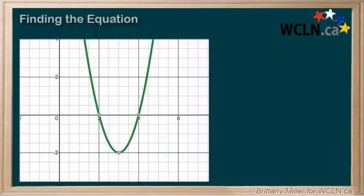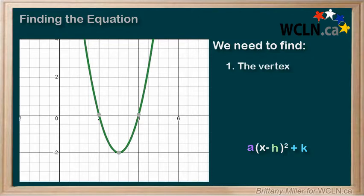Behold this mystery parabola. In order to fill out our equation in vertex form, we need the following information. One, the vertex. The vertex of our parabola is (h,k), so by finding the vertex we get h and k. It's like a two-for-one deal.